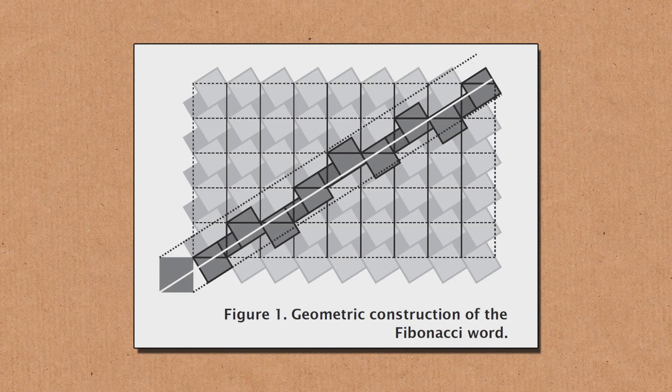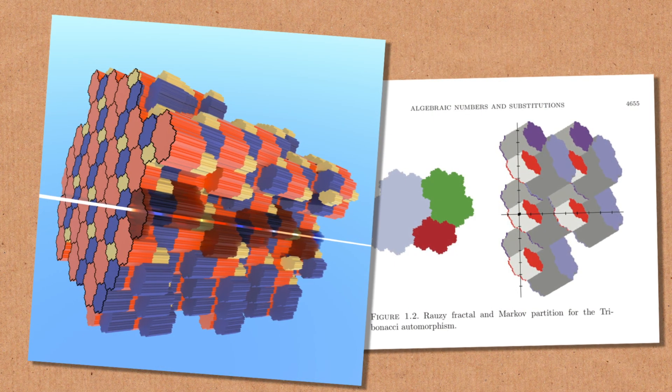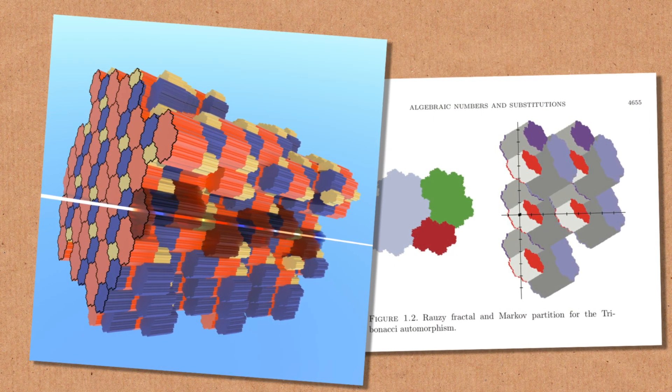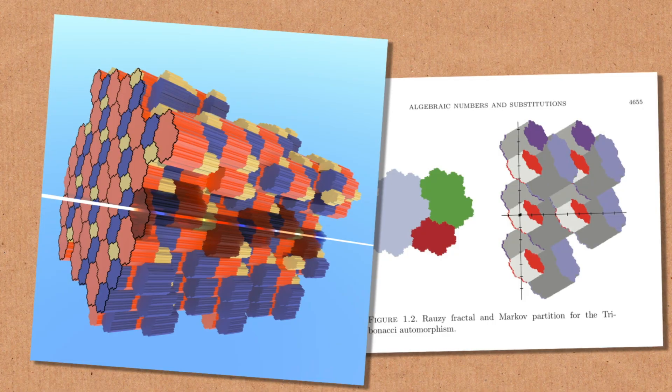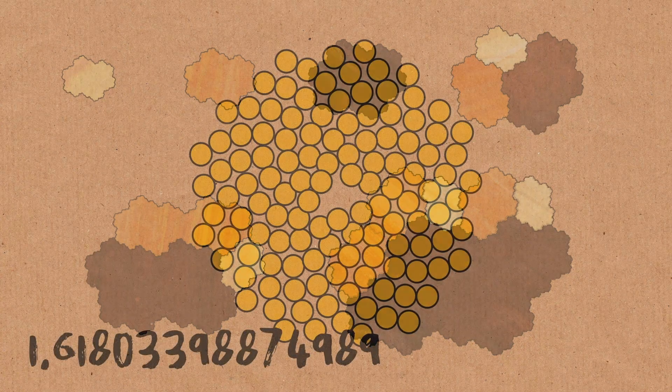The golden ratio and Fibonacci numbers are really important in the study of two-dimensional Markov partitions. When you go up to three dimensions, you have to deal with cubic things — it's quite natural. It's almost like the ancient Greeks who felt that a cubic number really was a cube; some people say they didn't even believe in fourth powers. When you're dealing with three dimensions, you naturally have cubic stuff.